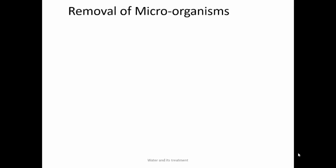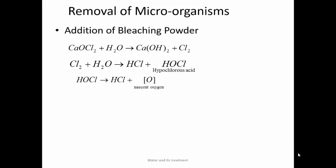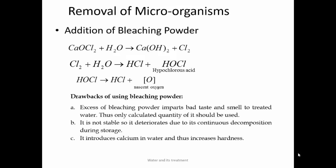Removal of microorganisms — first method: addition of bleaching powder (CaOCl₂). This is a small-scale method. Bleaching powder reacts with water to give Ca(OH)₂ and releases chlorine. Chlorine reacts with water to give HCl and hypochlorous acid (HOCl). HOCl being unstable dissociates into HCl and nascent oxygen. Nascent oxygen deactivates enzymes in microorganisms causing their death. Drawbacks: excess bleaching powder imparts bad taste and smell; only calculated quantity must be added. It is not stable and deteriorates during storage. It introduces Ca²⁺ into water, increasing hardness.